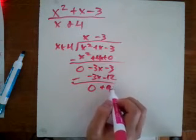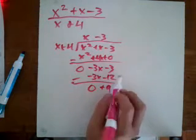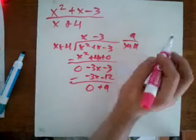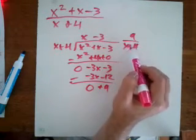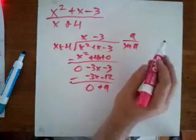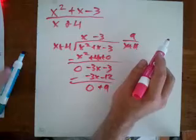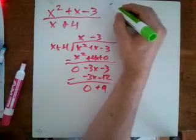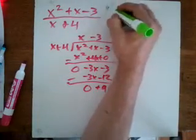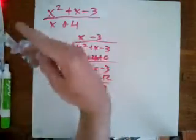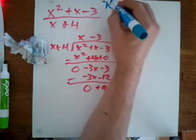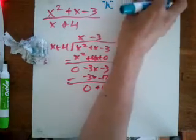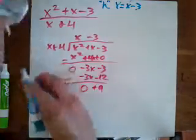So 9 is our remainder. Written out, the remainder would be 9 over the divisor, which is 9 over x plus 4. Since the degree of the numerator is less than the degree of the denominator, that term goes to zero as we look at end behavior. We can ignore it for finding the asymptote. The equation of the oblique asymptote — I'll label it with an 'H' in quotes since it's not truly horizontal but oblique — is y equals x minus 3.